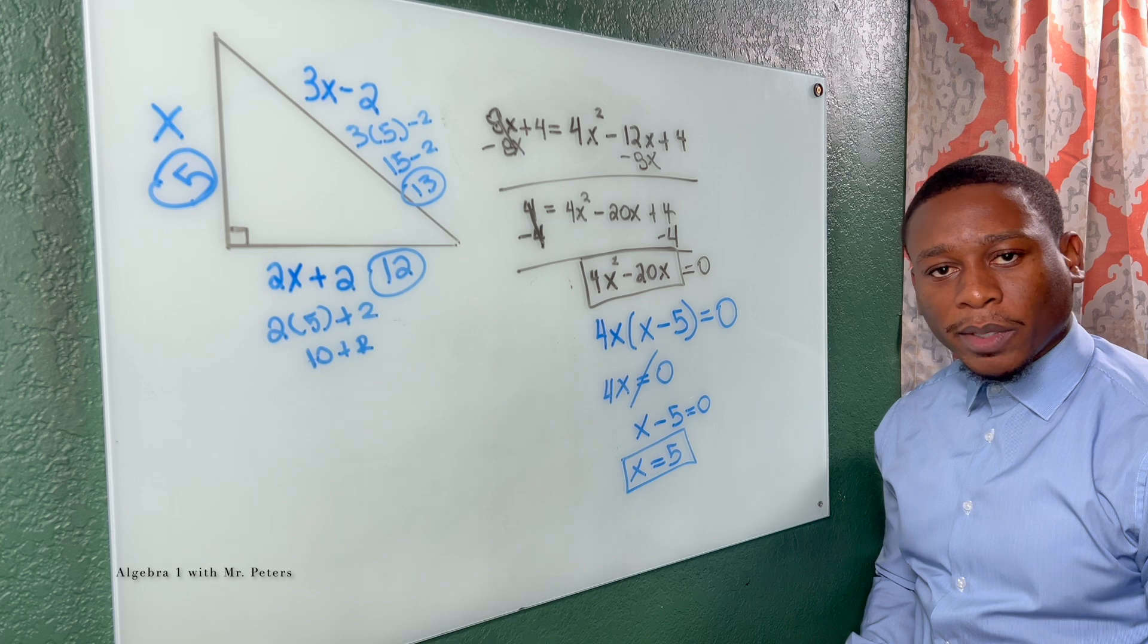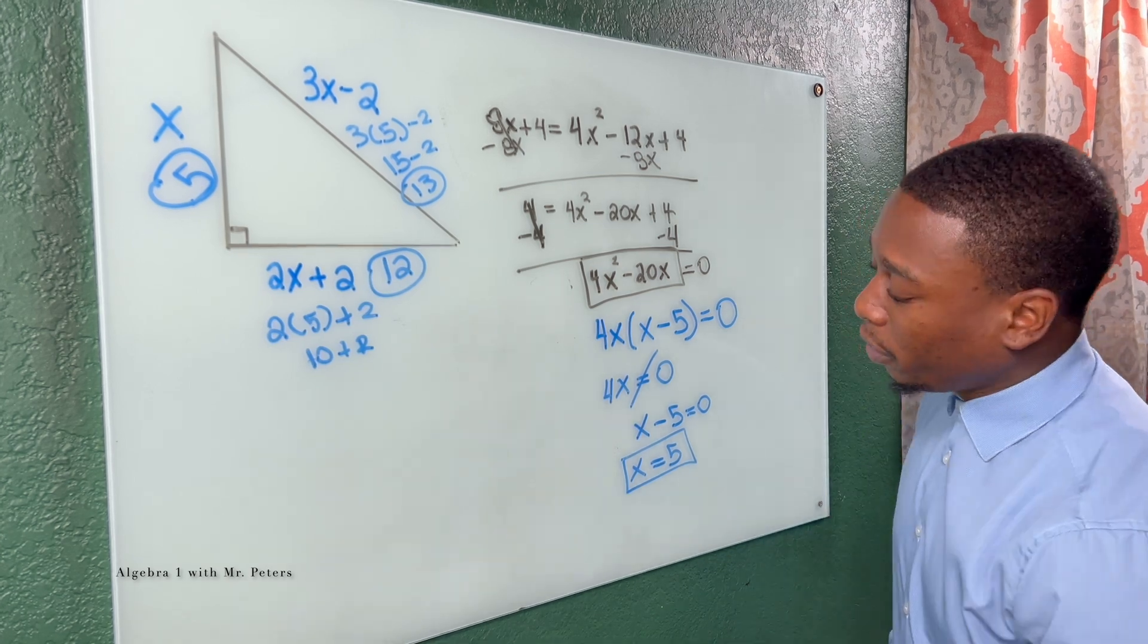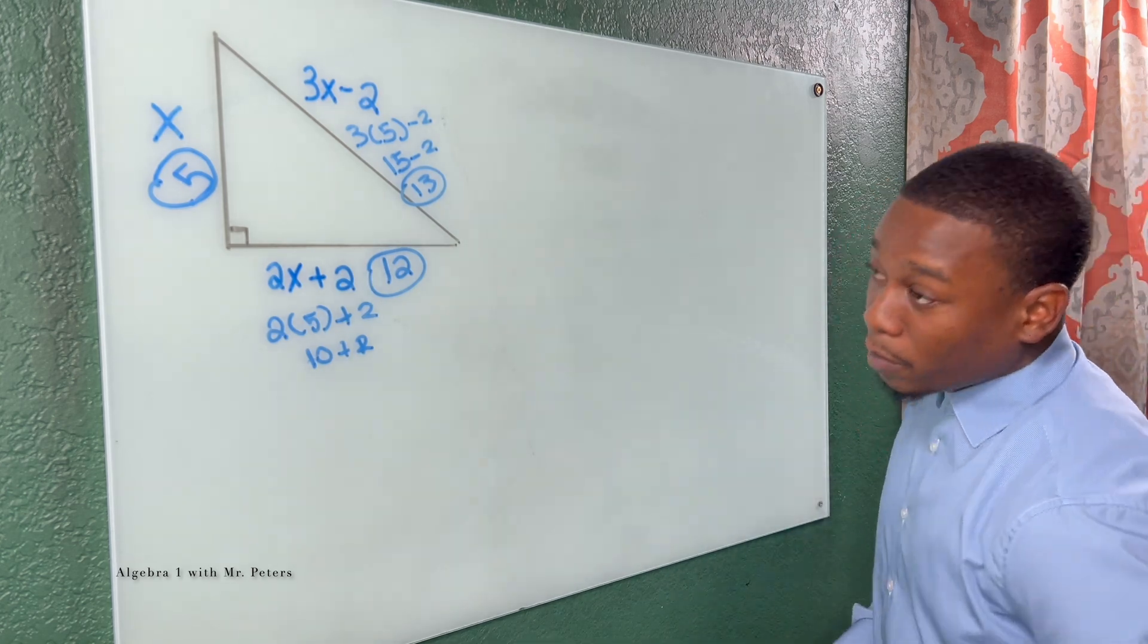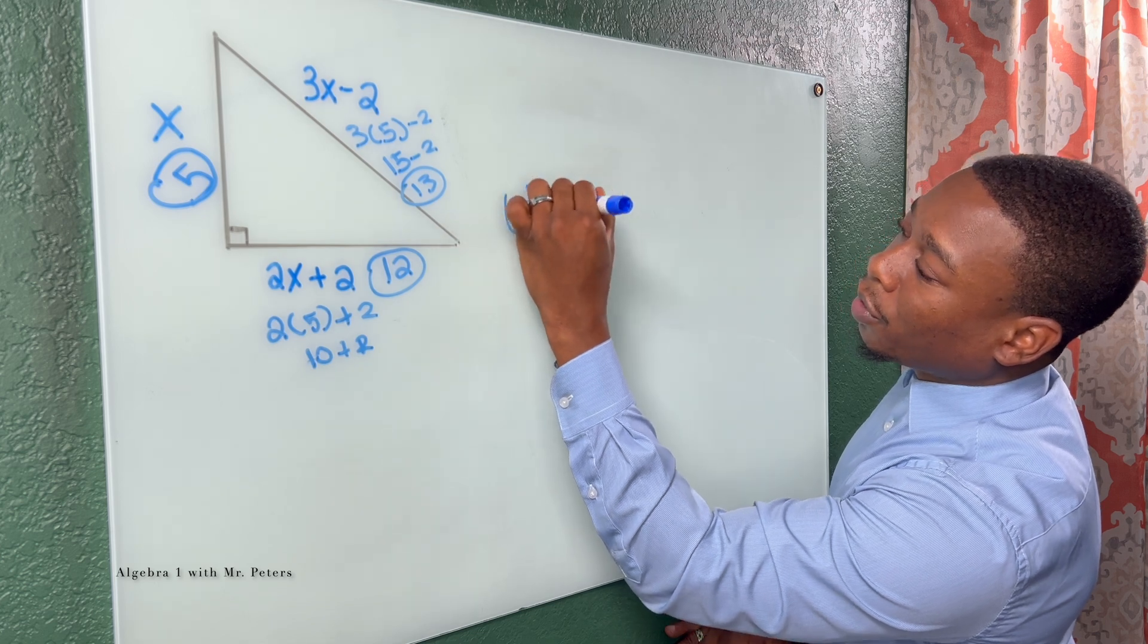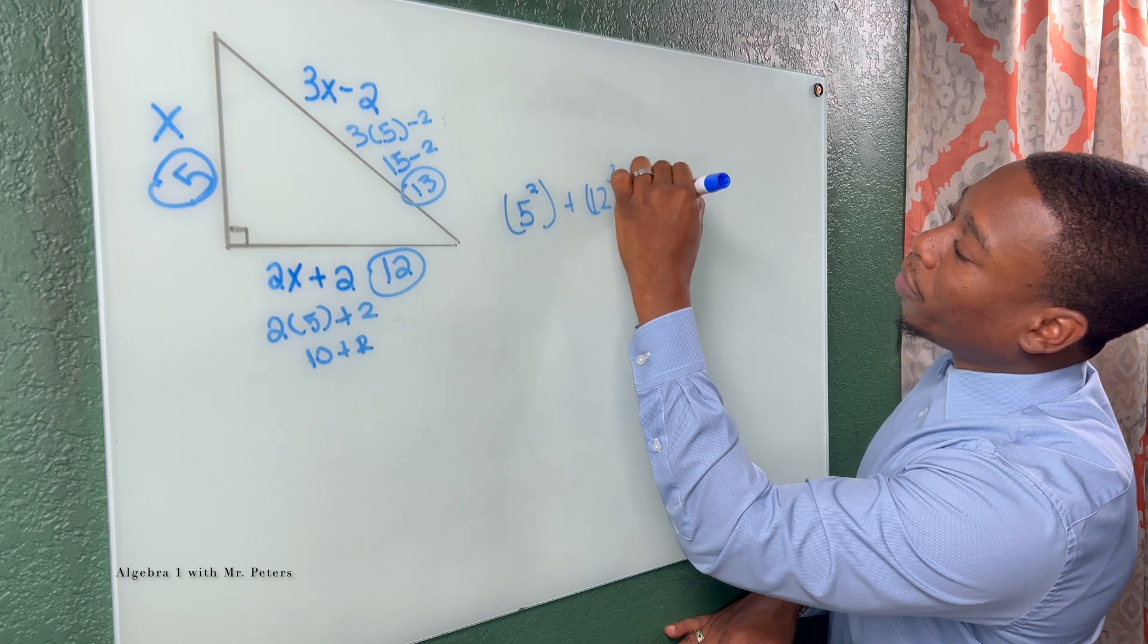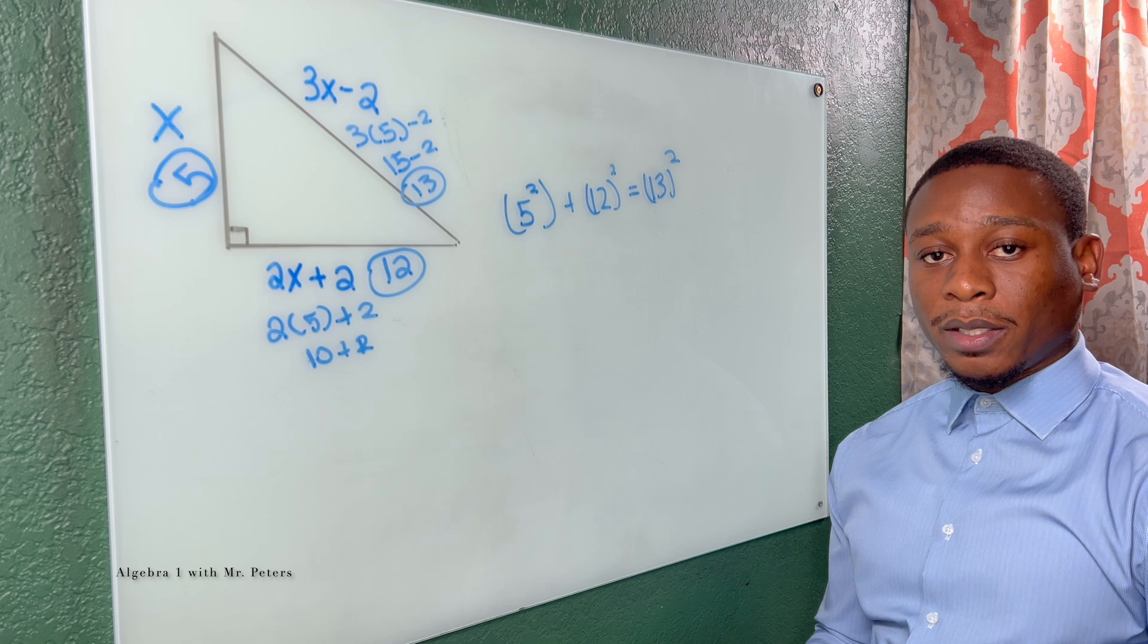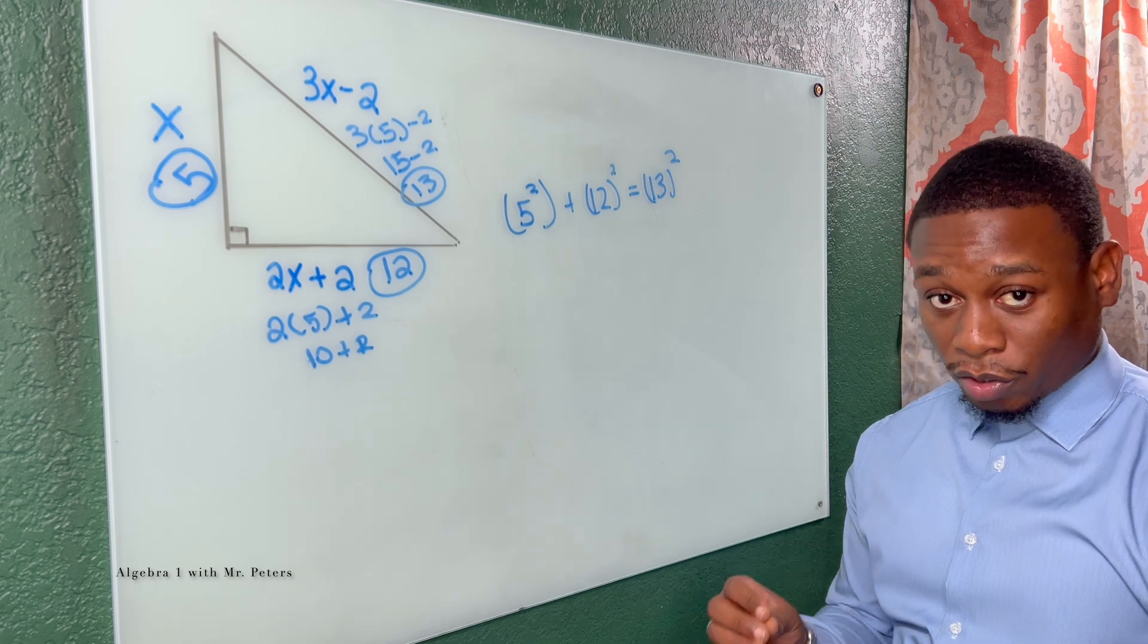Now, how can we determine or check to see if this is actually correct? I got you, family. So what we're going to do is use the Pythagorean theorem again, meaning 5 squared plus 12 squared is equal to 13 squared. If this is a true statement, then we know the answer is correct. If not, then we probably have the answer wrong.